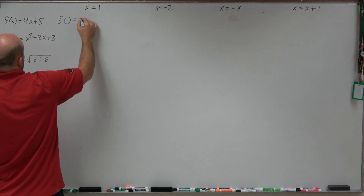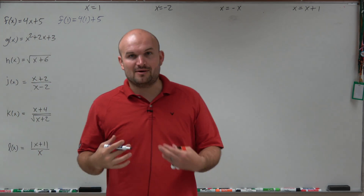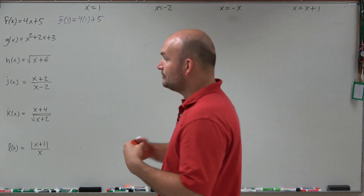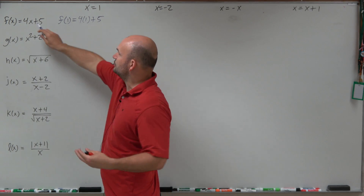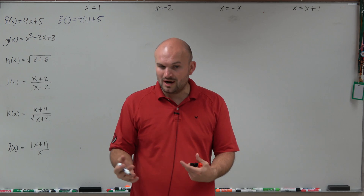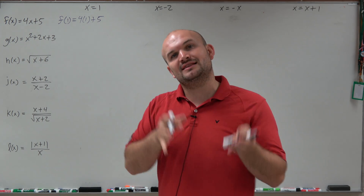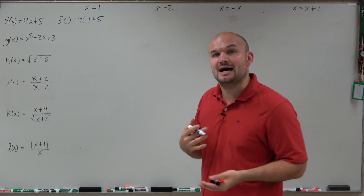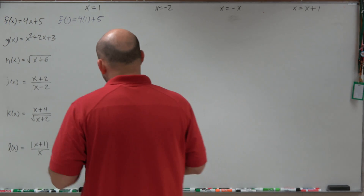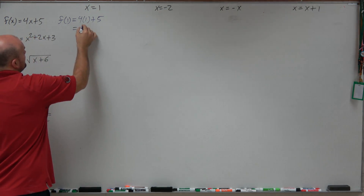All you're simply going to do is plug in 1 for x. For simple equations you can probably get by without parentheses; however, I recommend whenever you're replacing your input with a value, put that value in parentheses. One, it's going to help you avoid mistakes, and two, it's going to remind you that you inserted that value in replacement of x. So 4 times 1 is 4, plus 5 is going to equal 9.